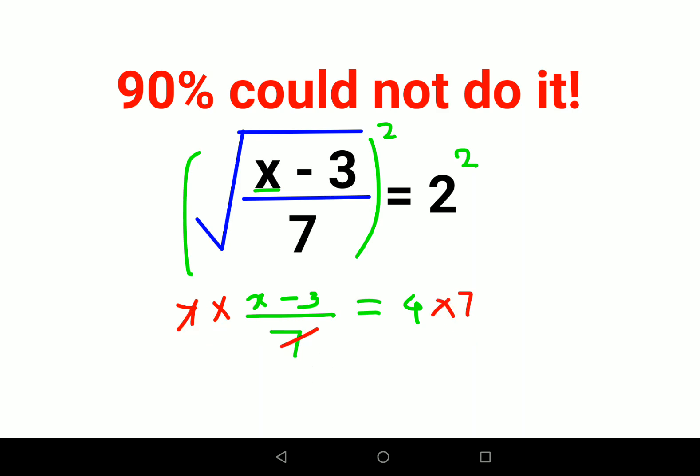This and this gets cancelled and we have x - 3 = 28. So now the value of x is what? Taking the minus 3 on the other side you get 28 plus 3, that is 31. This is the value for your x in this particular question.